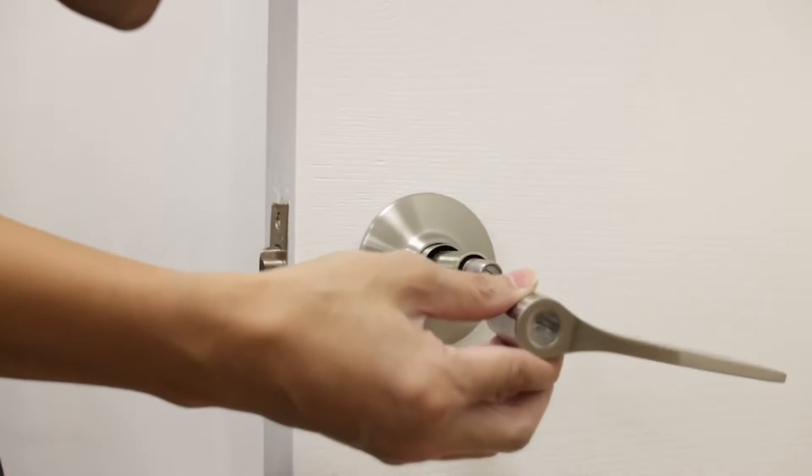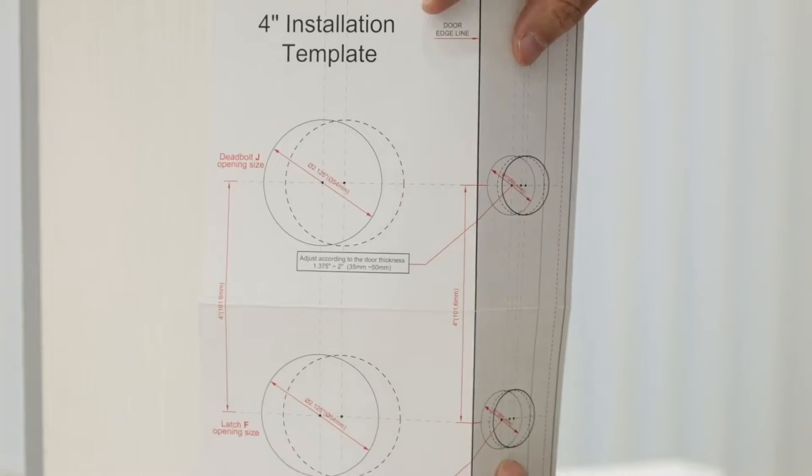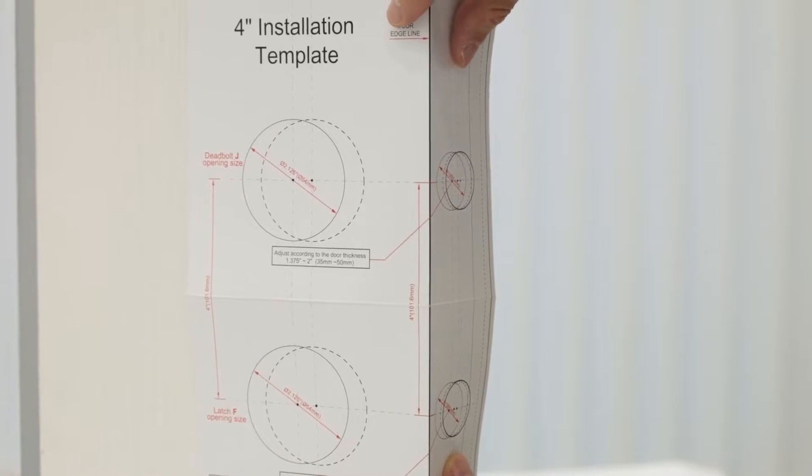Remove existing door hardware, deadbolt or latch before installing the new lock. Use provided template to bore new holes if needed.